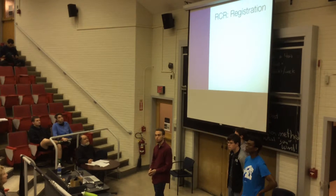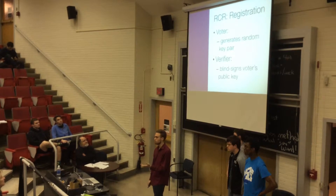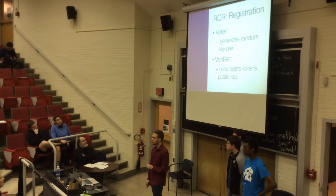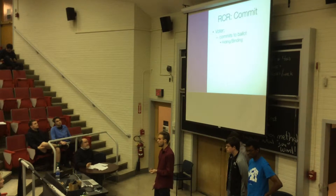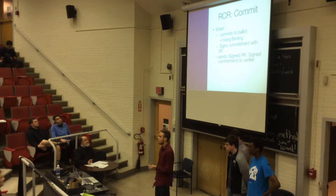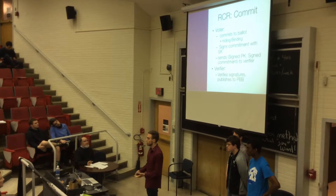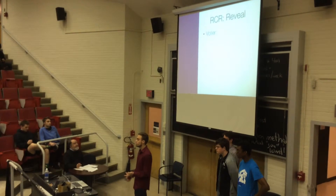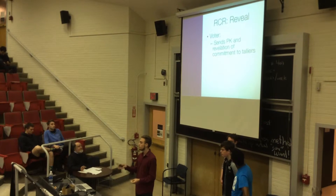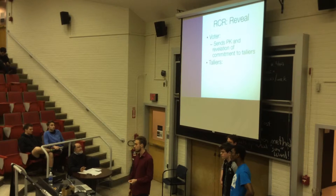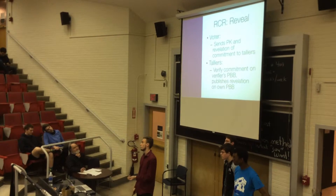In the RCR scheme, the first phase is registration. The voter generates a private and public key, then sends a proof of identity and eligibility to vote to the verifier, who blind-signs the voter's public key. During the commitment phase, the voter decides how they're going to vote, fills out a ballot, and commits to that ballot using a commitment scheme that is both binding and hiding. They then sign this commitment with their secret key and send their signed public key and signed commitment to the verifier. The verifier validates the signatures and, if they check out, publishes that information to the public bulletin board. During the reveal phase, the voter verifies that the verifier published the commitment on the public bulletin board, and if so, sends his public key and the revelation of his commitment to one or more talliers. The talliers verify that the revelation matches a commitment published on the verifier's public bulletin board, and if so, publish the revelation on their own public bulletin boards.